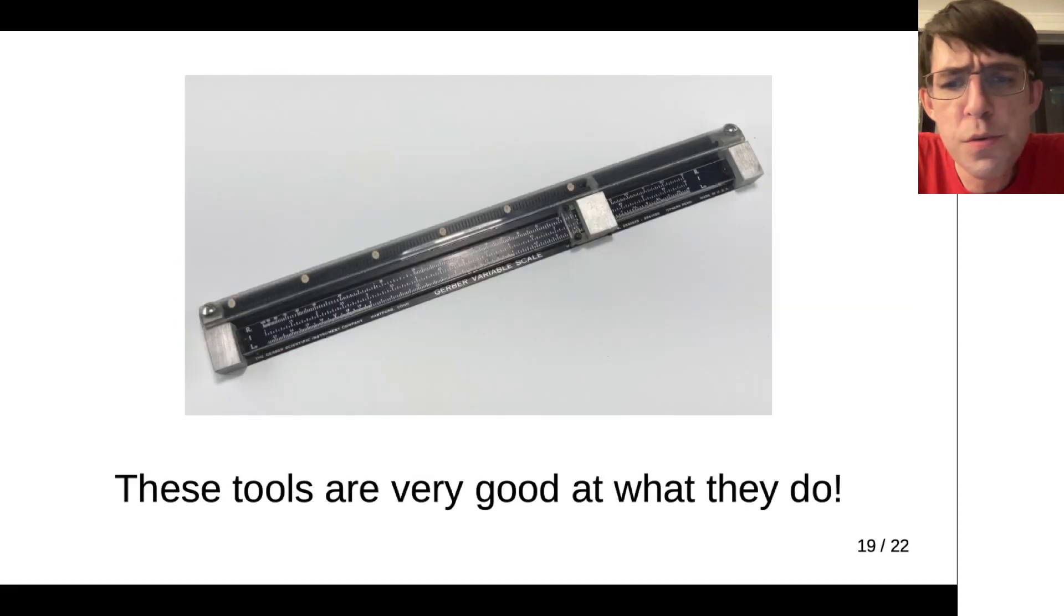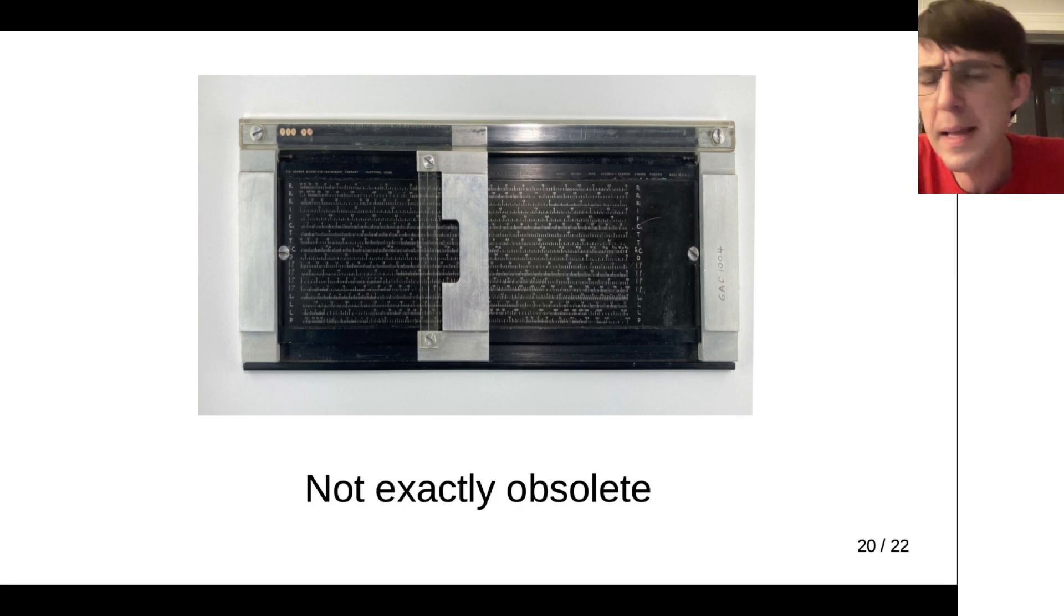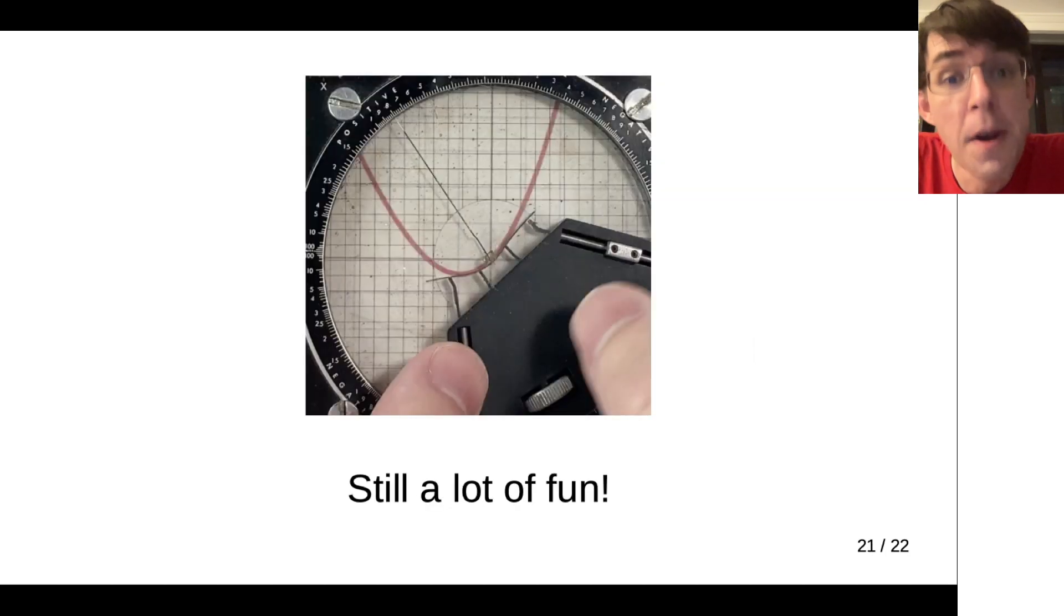I would say these tools are really quite good at what they do. Those operations, they're fairly specific operations that I outlined there, that in my opinion, there are not really modern tools that do this better, right? Essentially, the entire enterprise has been made obsolete by computers, but if you actually had to divide lengths on paper into equal segments or whatever, the variable scale is still maybe the best way to do that. And still a lot of fun.